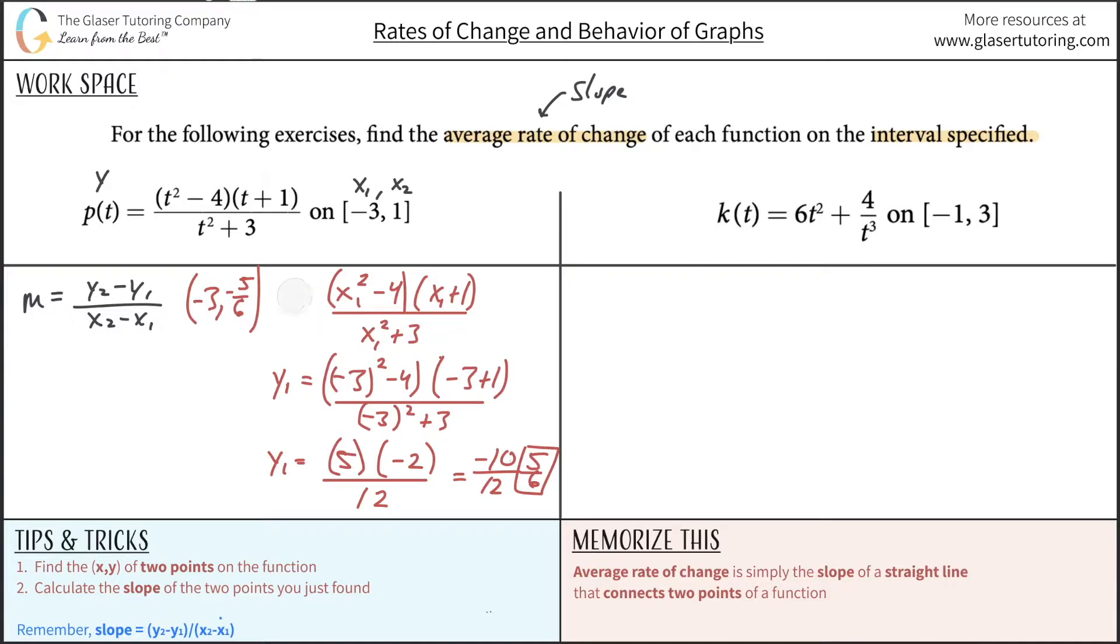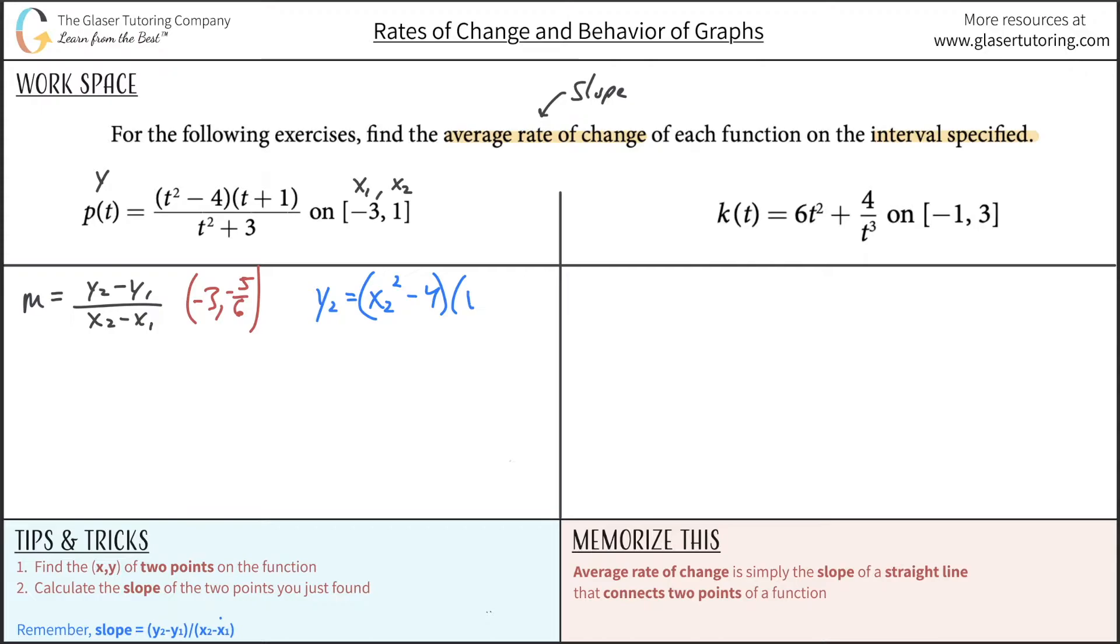So I'm going to erase this work in a second, but I'm first going to write down the coordinates. So we had the x1, which was negative three, we said. And then its corresponding y1 value was now negative five over six. Great. Now let's erase all this beautiful work. And let's now do y2. So it's literally going to be the same thing. Let's do it.